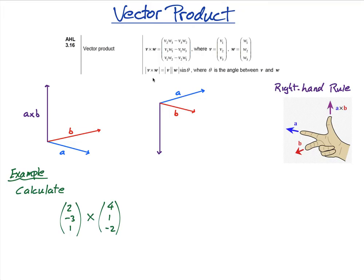The magnitude of the vector product is equal to the magnitude of v cross w is equal to the magnitude of v times the magnitude of w, times the sine of the angle between them. I'm going to talk about this formula in more detail in a following lesson. This lesson I just want us to find the vector product of two vectors.